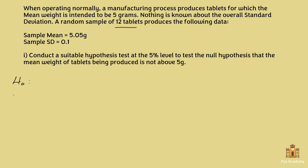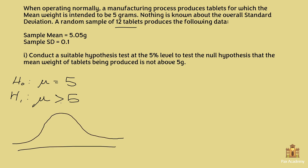Let's write down the null and alternative hypotheses. H0: μ = 5 grams. The question asks us to test whether the mean weight is not above 5 grams, so the alternative hypothesis is H1: μ > 5 grams. Drawing the distribution, this is again a one-tailed test since the alternative can only go one way — higher. We shade the rejection region on the right-hand side. At the 5% level, the rejection area is 0.05 and the acceptance area is 0.95.